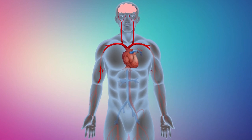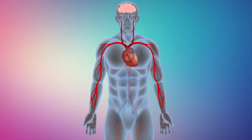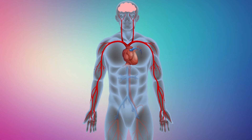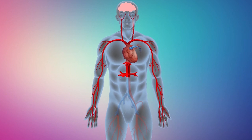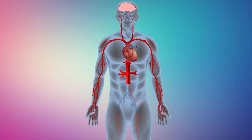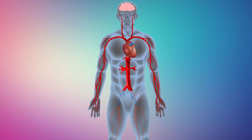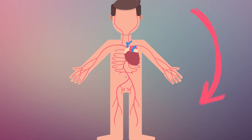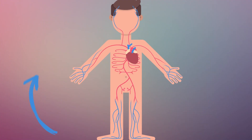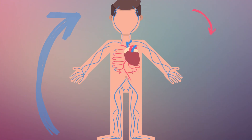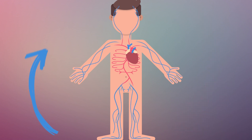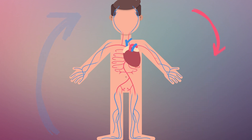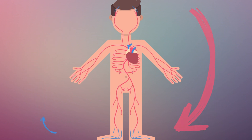From there, the blood continues to flow into our arms, then through the aorta, around the thorax and abdomen, and finally reaching both of our legs. As this trip is circular — that is to say, it has no end — the blood starts the trip back to the heart to regain nutrients and oxygen.